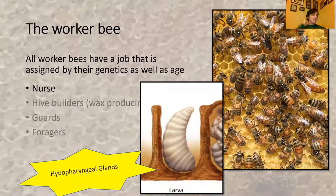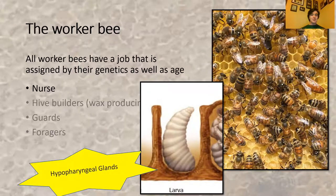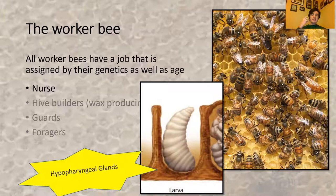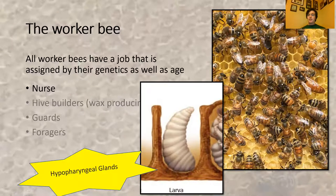Nurse bees feed the larvae from a particular gland — the hypopharyngeal gland — right as they emerge. That gland turns off after about two weeks, making the bee unable to feed larvae anymore. A worker bee consumes pollen and honey and uses that gland to secrete larval food. Nurse bees also feed the queen from that same gland.